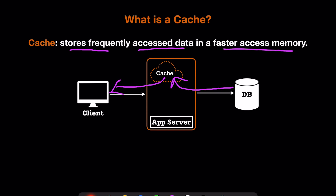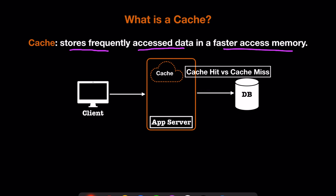When we talk about caching, we need to discuss cache hit versus cache miss. When a customer calls us and we find the data in the cache, that is called a cache hit — we return that data without making any call to the database. If the customer requests data and we do not find it in the cache, we must call the DB — that is known as a cache miss.